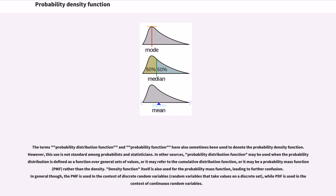The terms probability distribution function and probability function have also sometimes been used to denote the probability density function. However, this use is not standard among probabilists and statisticians. In other sources, probability distribution function may be used when the probability distribution is defined as a function over general sets of values, or it may refer to the cumulative distribution function, or it may be a probability mass function rather than the density. In general, the PMF is used in the context of discrete random variables, while PDF is used in the context of continuous random variables.